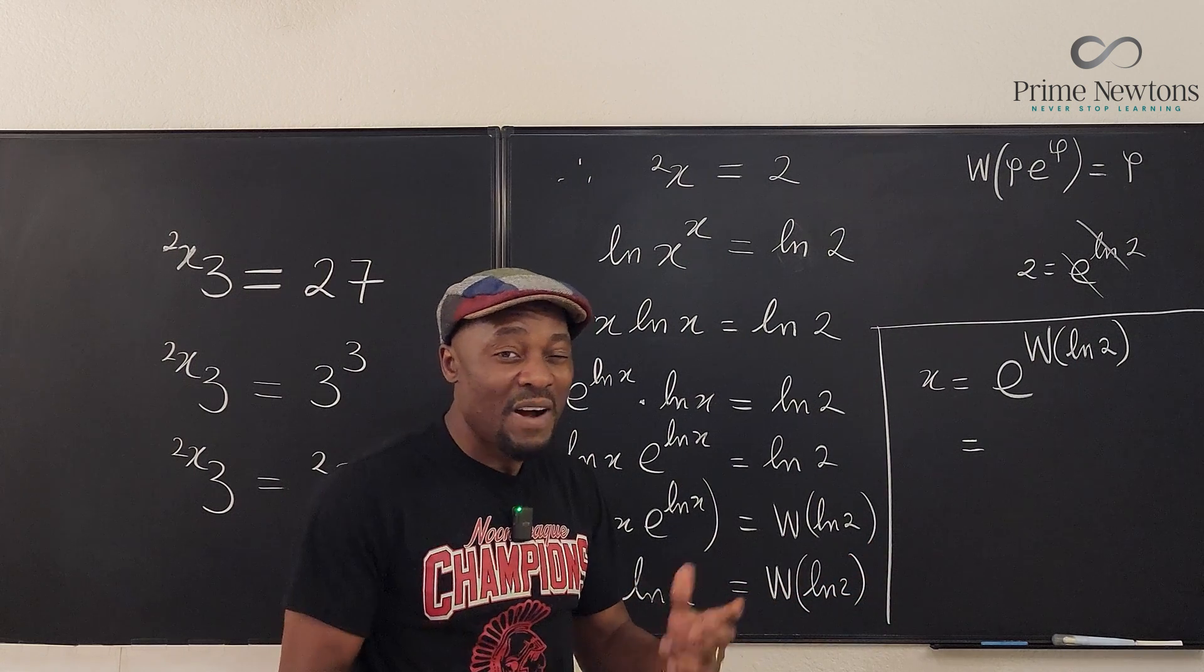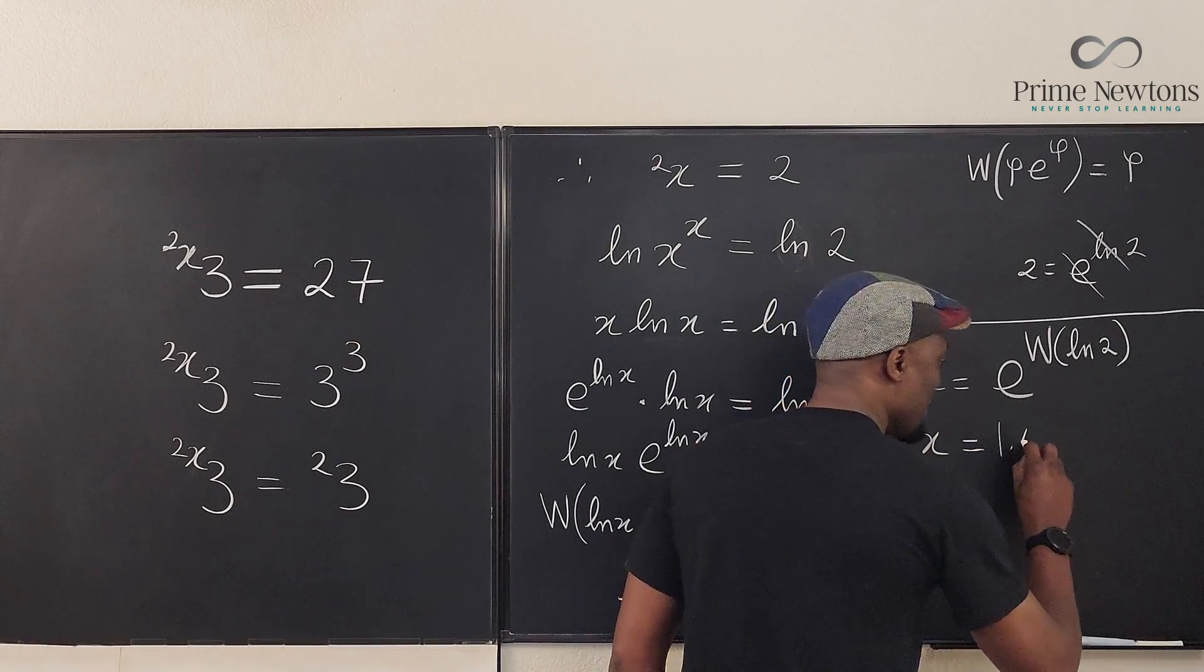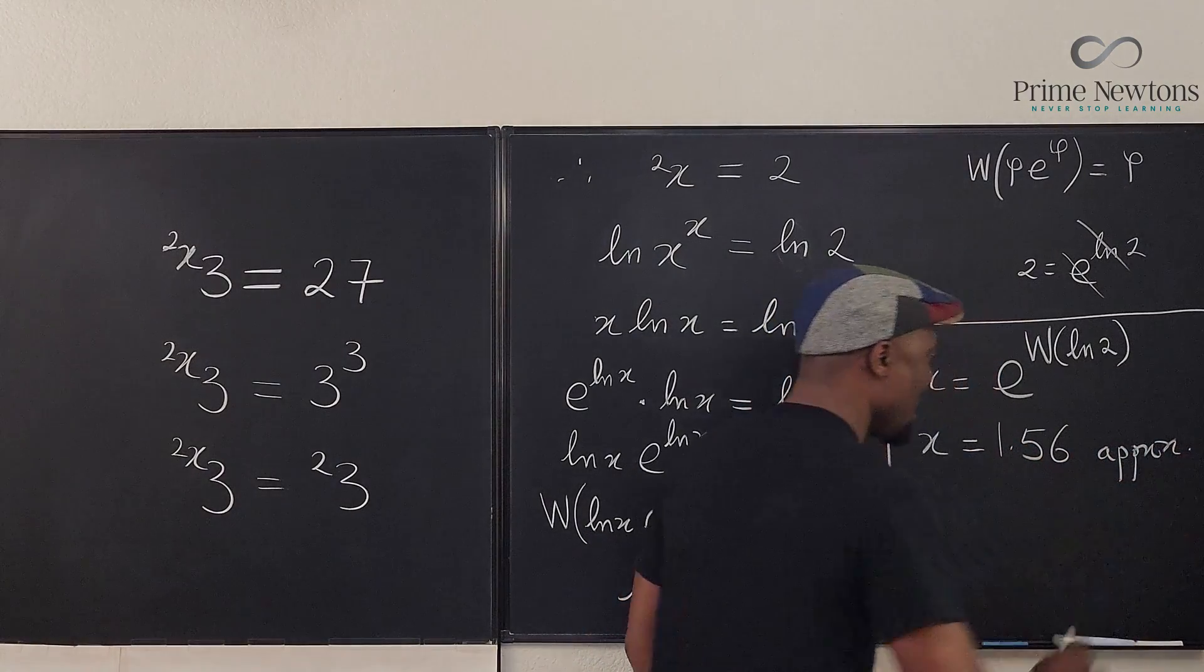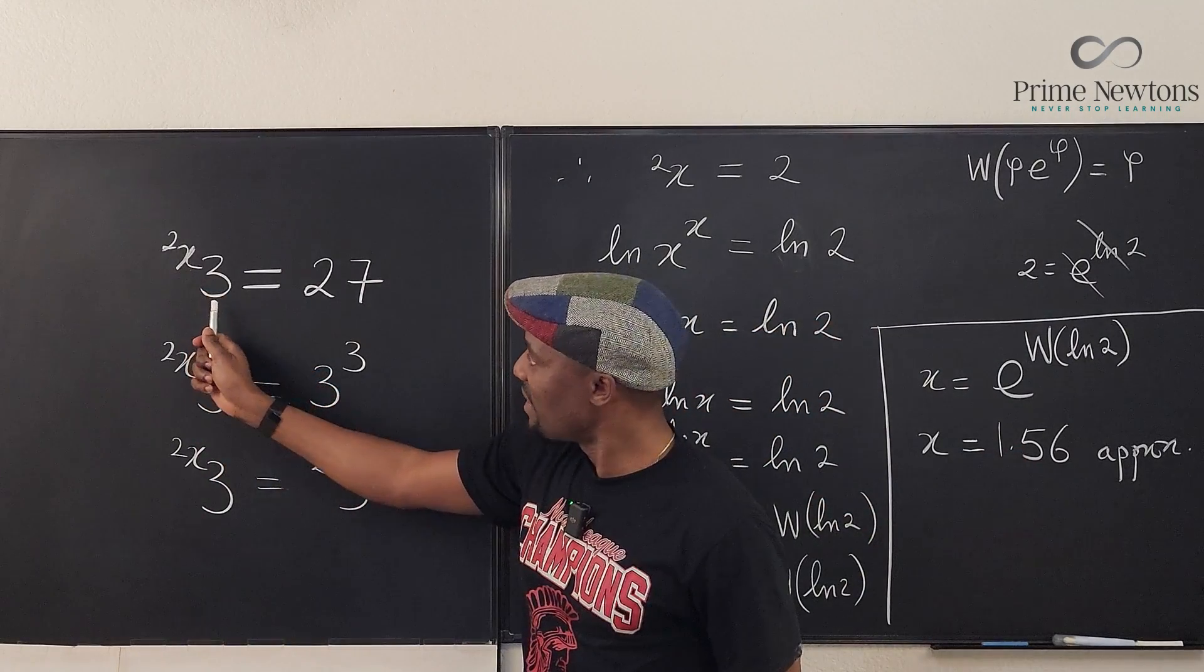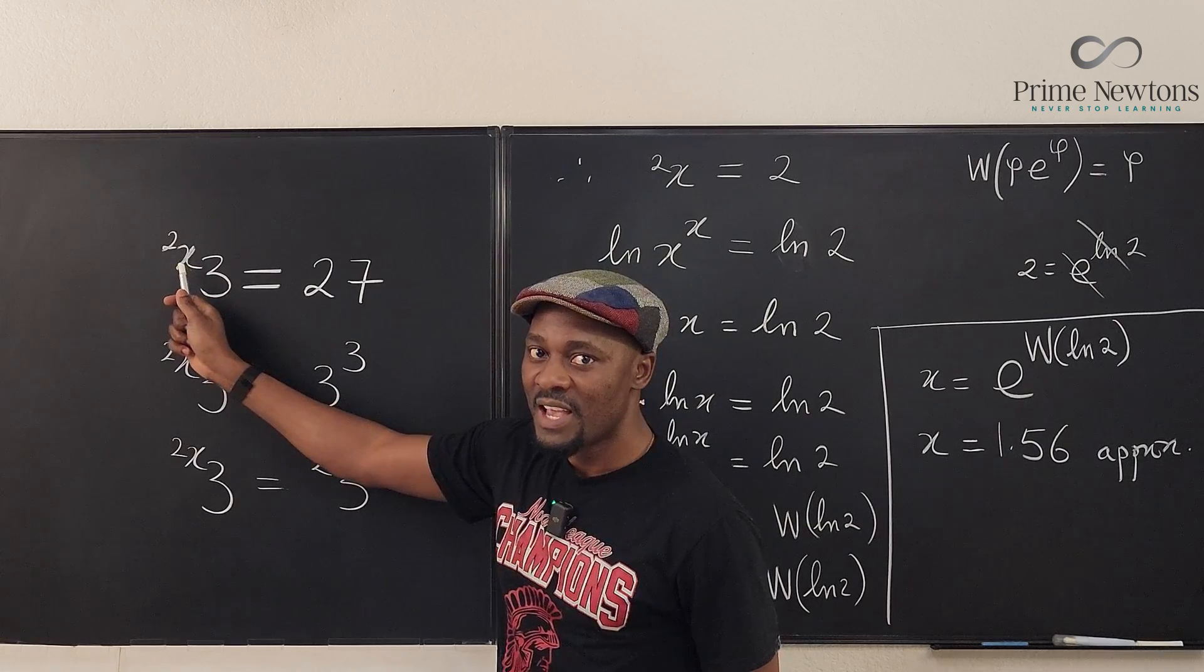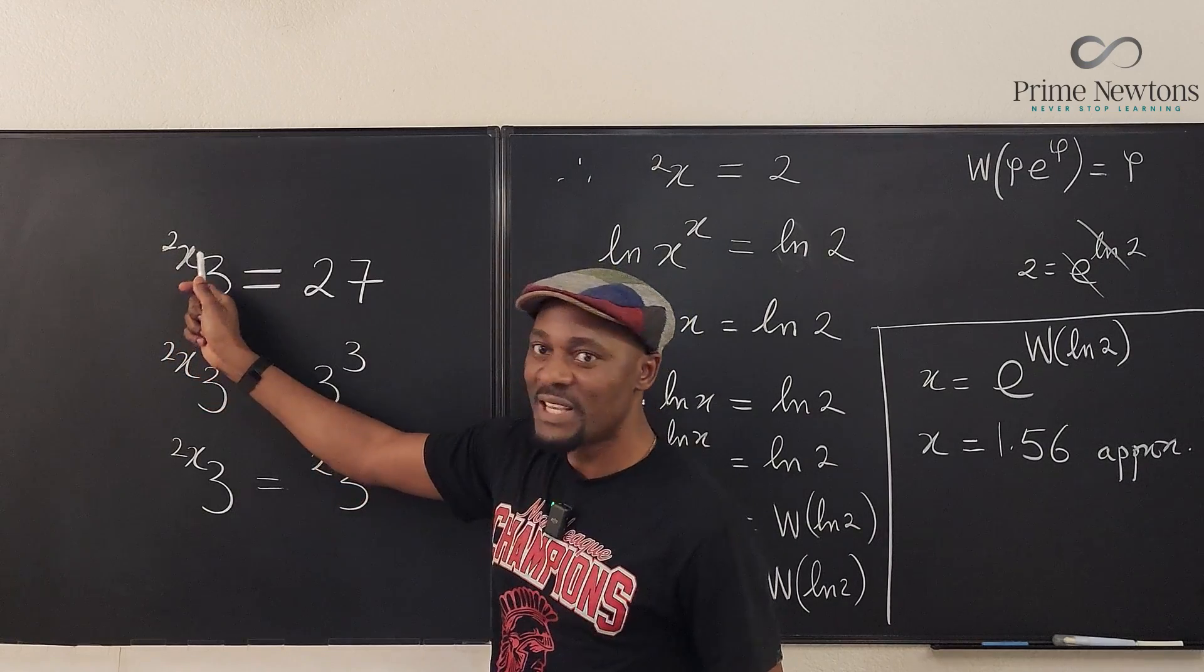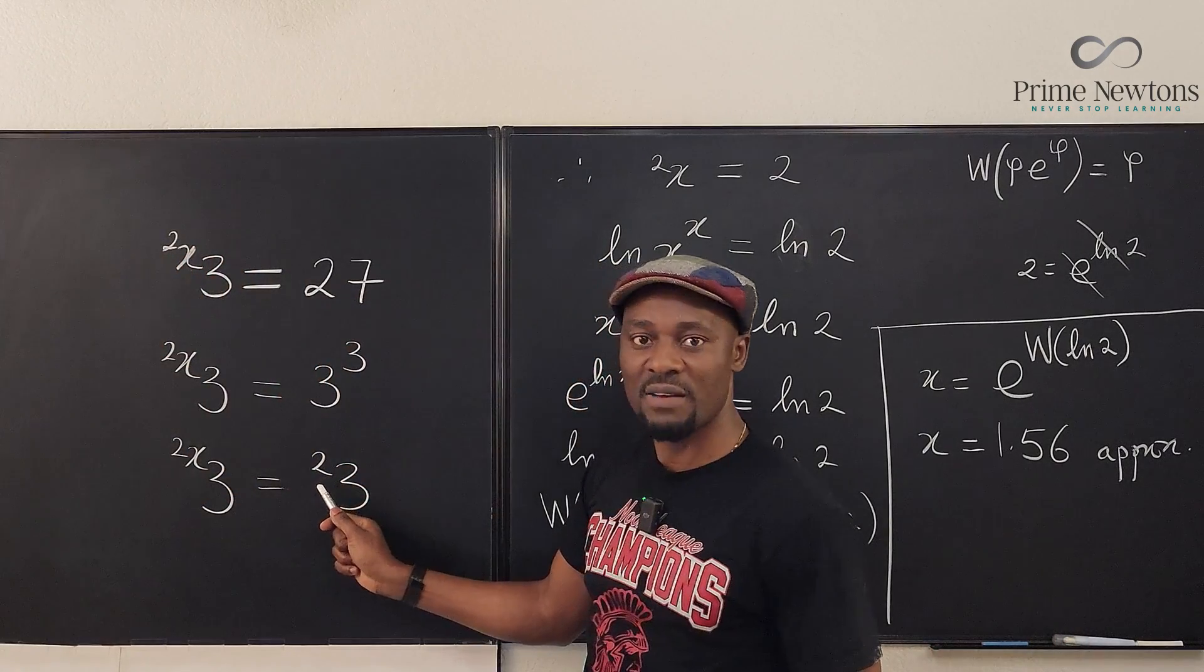Your answer is 1.56 approximately. x equals 1.56. Let's just stop there. And if you take this 1.56 and you put it here, you will notice that this is going to be 3 to the superpower of 1.56 to the superpower of 2, which is 1.56 to the 1.56, which is 2, which is the same thing as what we have here.